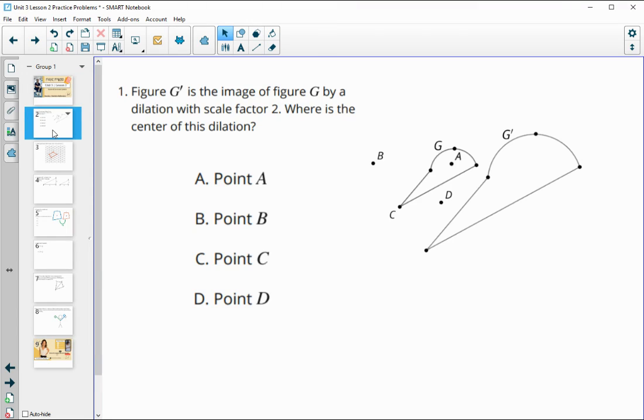Number one has a figure G prime, which is the image of this smaller figure G with a dilation by a scale factor of two. So it's doubling in size. Where is the center of rotation?